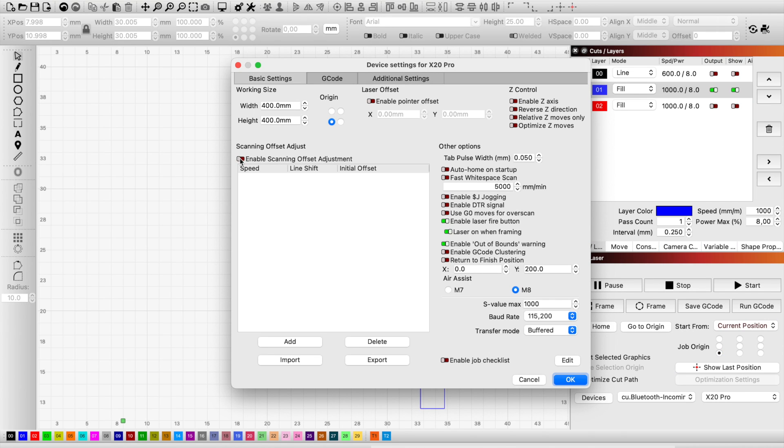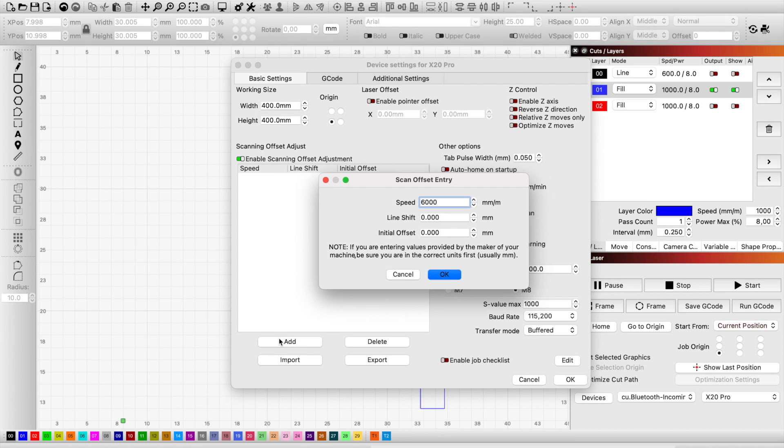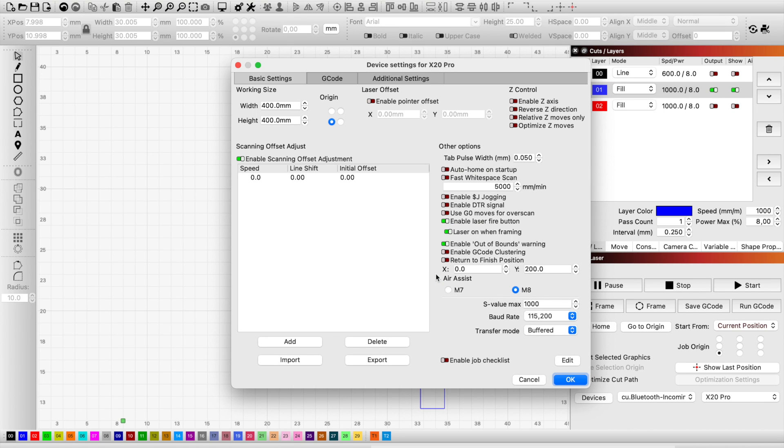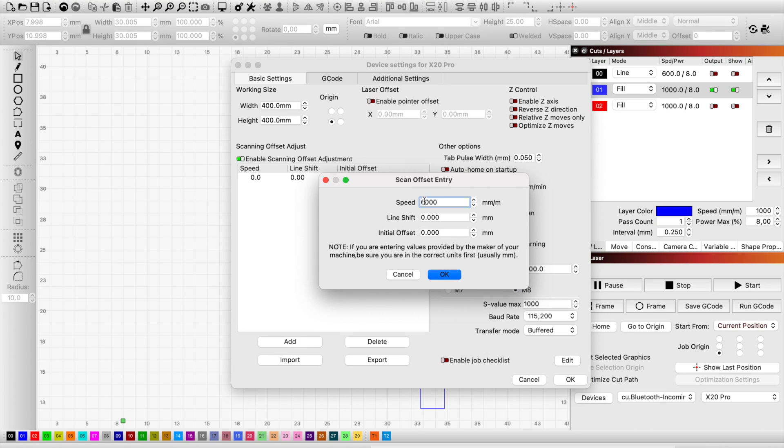Scanning offset is found under device settings. Enable this feature and don't forget to add the first test entry as speed 0 and offset 0, and leave the initial offset 0 as the default value. Since our test speed was 1000, an entry of 1000 and 0 is added to the list as well.